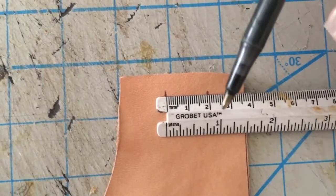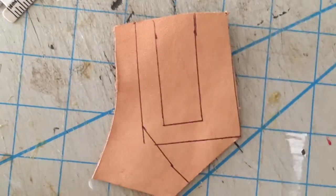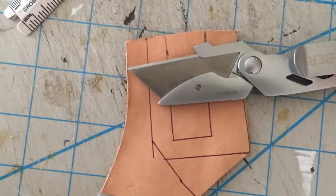So we're going to outline that. We have something like this and we have to cut it out with the knife.